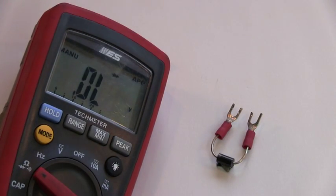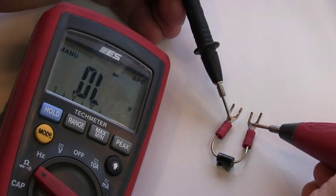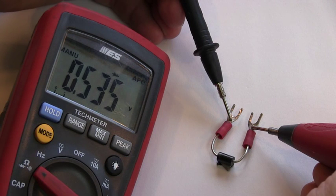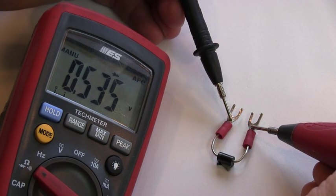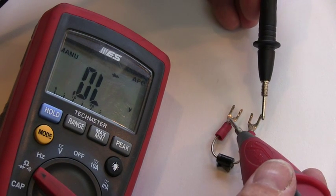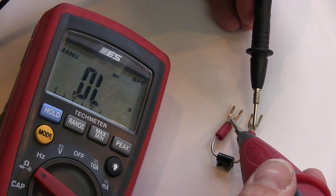Test the diode by touching the meter leads to the two diode leads. If the diode is in forward bias, the reading will be approximately one-half volt. If the meter is connected backwards, the reading will be OL volts.